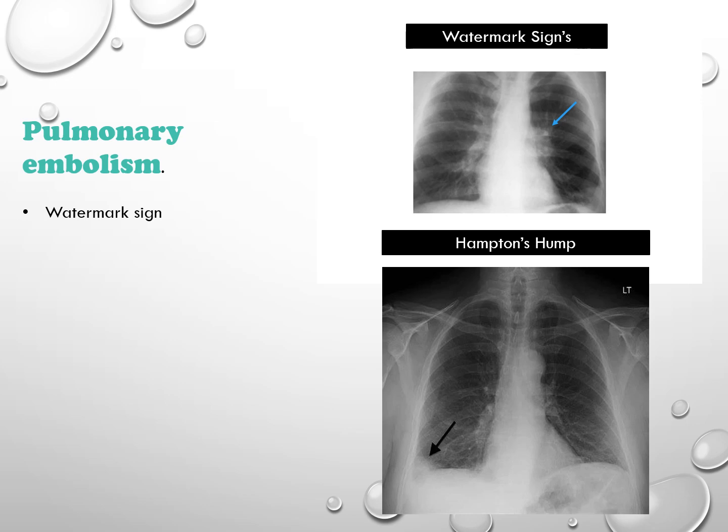These x-rays reveal signs suggestive of pulmonary embolism. The Westermark sign, visible in the first x-ray, displays the dilatation of pulmonary vessels proximal to the embolism, alongside the collapse of distal vessels. Additionally, the presence of a Hampton's hump in the second x-ray, characterized by a cone-shaped area of peripheral opacification, typically signifies infarction.